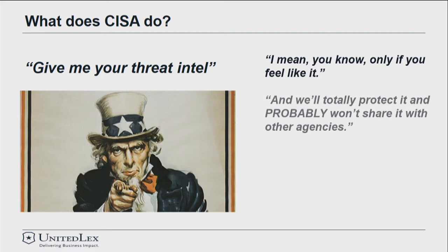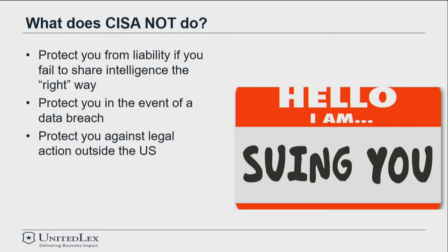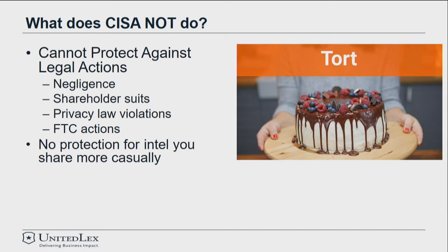That's really what CISA does. I like to boil it down: give me a threat, and we'll totally protect it, and we probably won't share it with other agencies — although they say they will share it if it will help them prosecute a crime, anti-terrorism, these kinds of things. And if there's stuff in there that makes you look bad, we're not going to use it against you — probably. But someone else might. It certainly doesn't prevent you from being pursued or having this information used against you by a regulator outside the United States or by civil litigants. What does CISA not do? It does not protect you from liability if you fail to share intelligence the right way. It does not protect you in the event of a data breach. And it does not protect you against legal action outside the U.S.